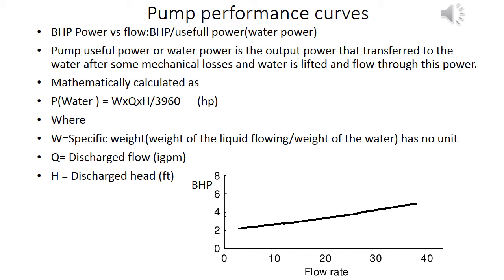Pump useful power, or water power, is the output power transferred to the water after some mechanical losses, used to lift and flow the water. It is mathematically calculated as: W equals specific weight of the liquid flowing relative to the weight of water (dimensionless), Q equals discharged flow, and H equals discharged head.